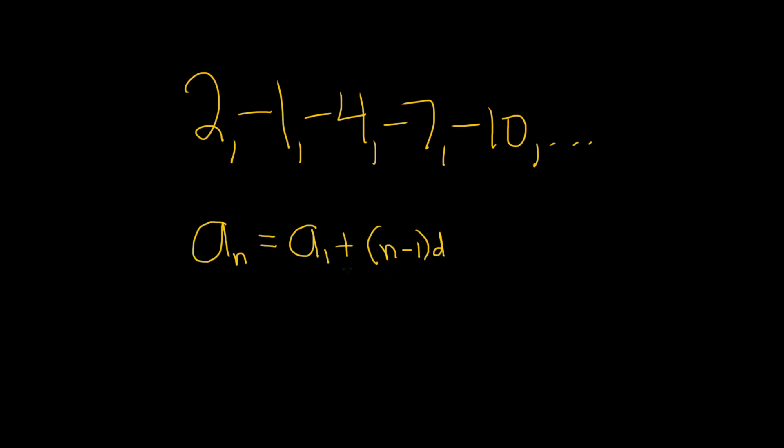And d here is called the common difference. It's the number that we keep adding over and over again. So in this case here, we determined that it was negative 3. And the first term in this case is just simply going to be 2.